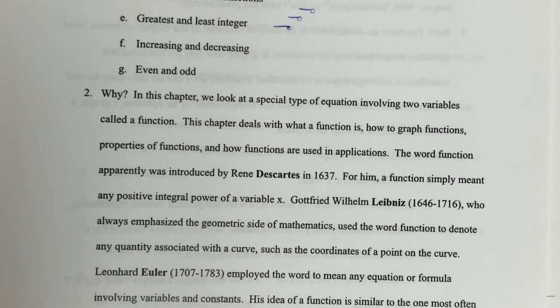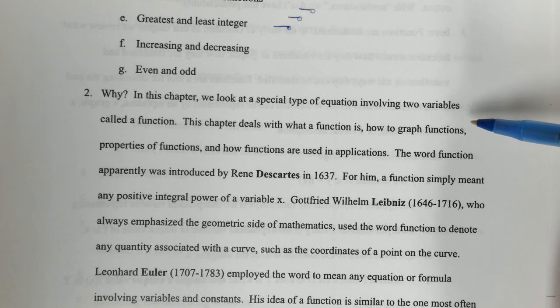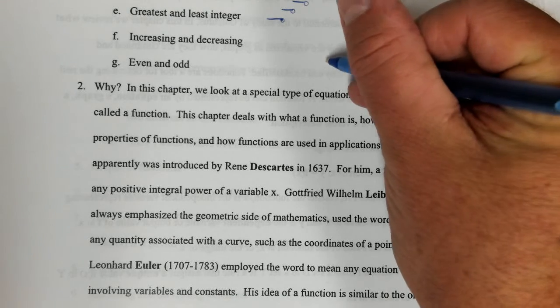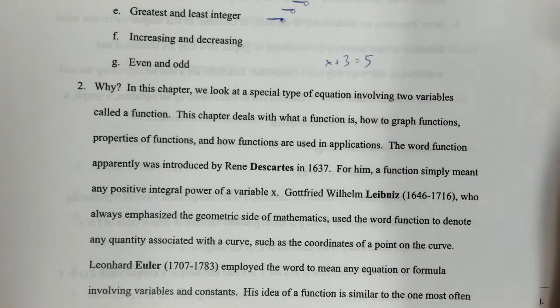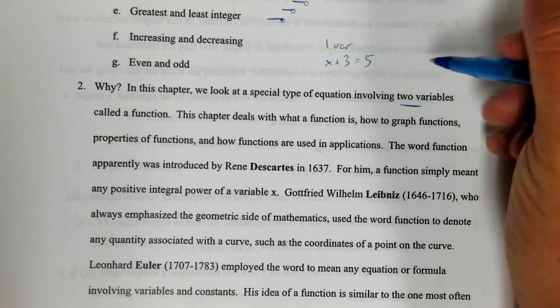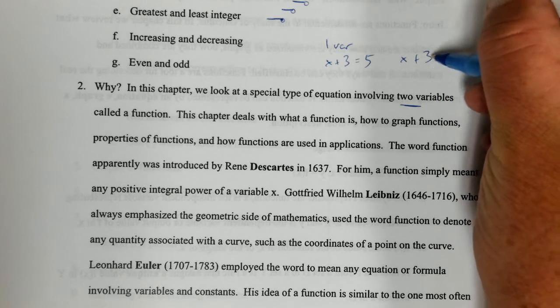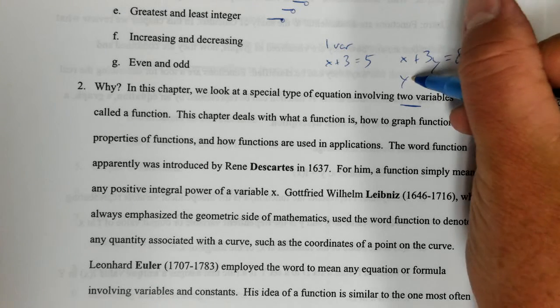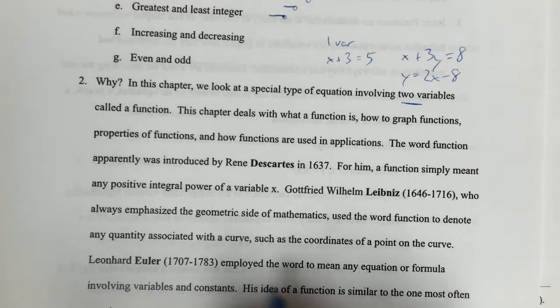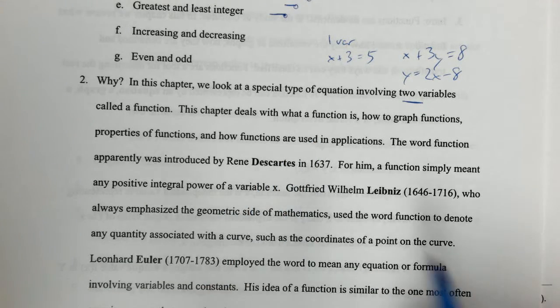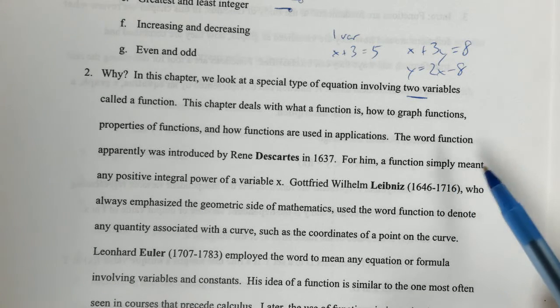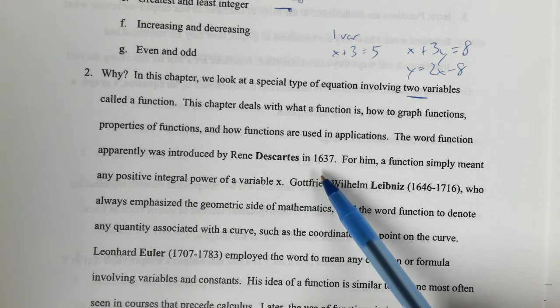So there's a lot of different parts to this. Why we're studying this: in this chapter we look at a special type of equation involving two variables called a function. So it's not just like x plus 3 equals 5, we want one with two variables, like something with x and y. This chapter deals with what a function is, how to graph functions, properties of functions, and how they're used in applications.